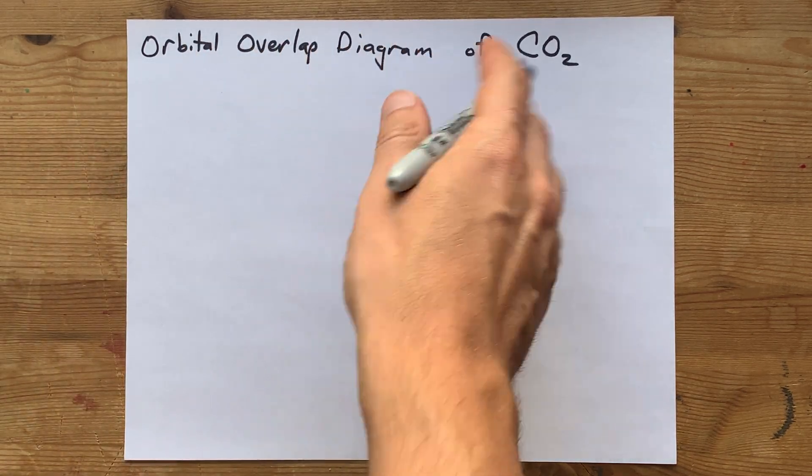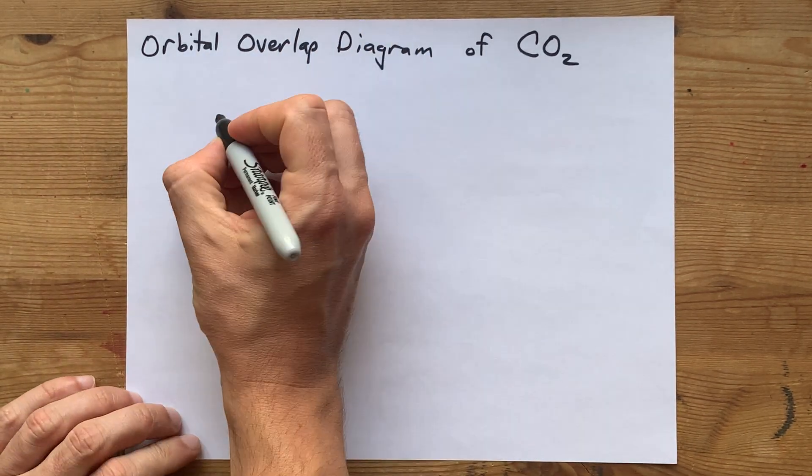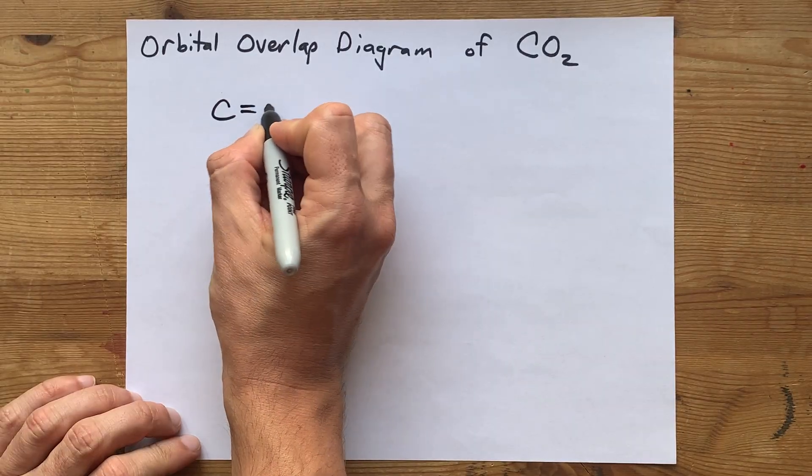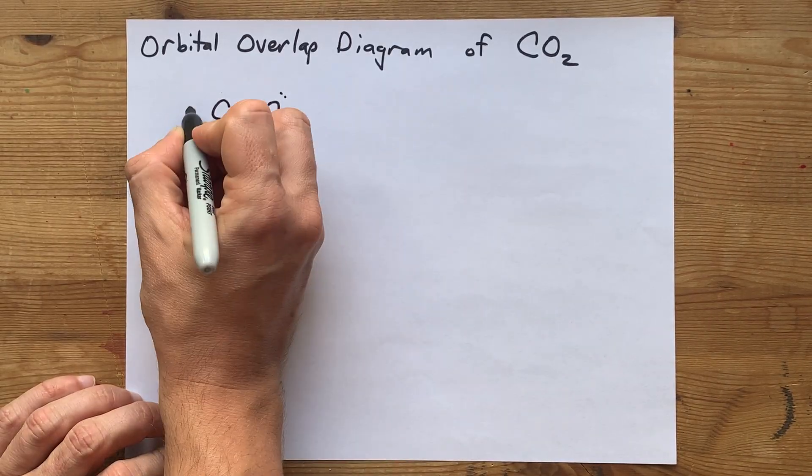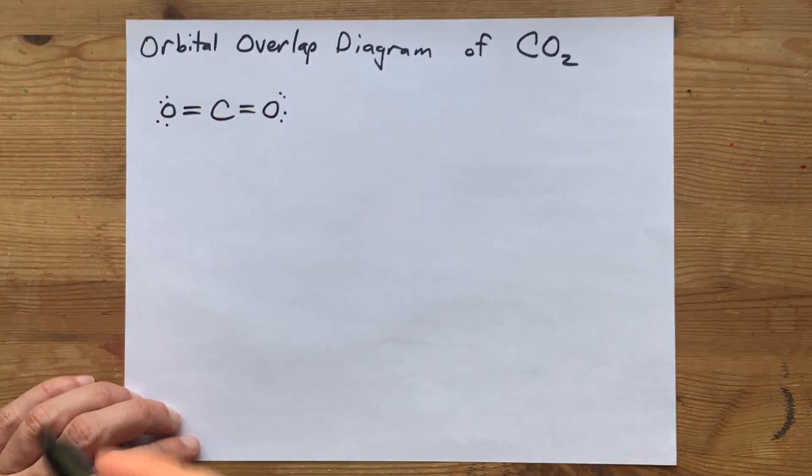We're going to draw the orbital overlap diagram for carbon dioxide. Before we begin, let's draw the Lewis structure so we can figure out what the hybridization of each atom is.